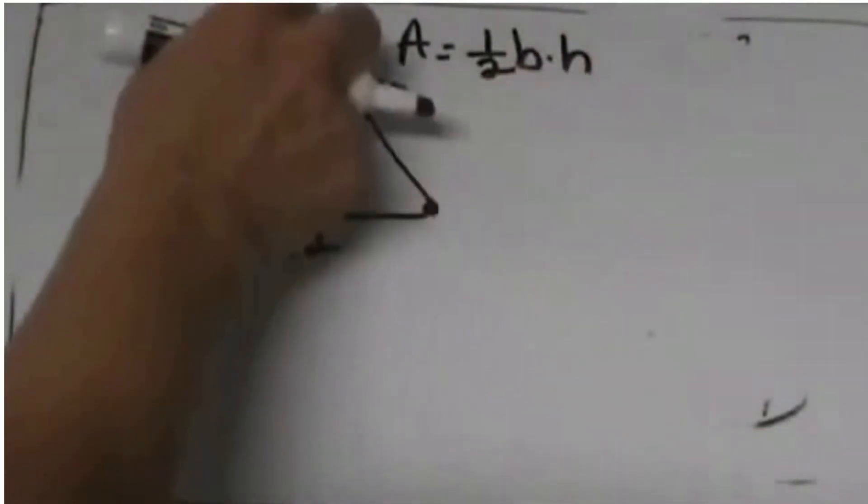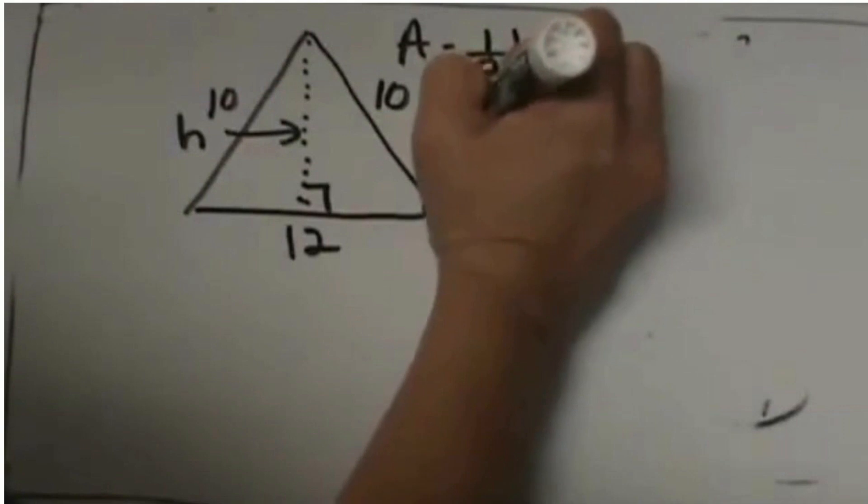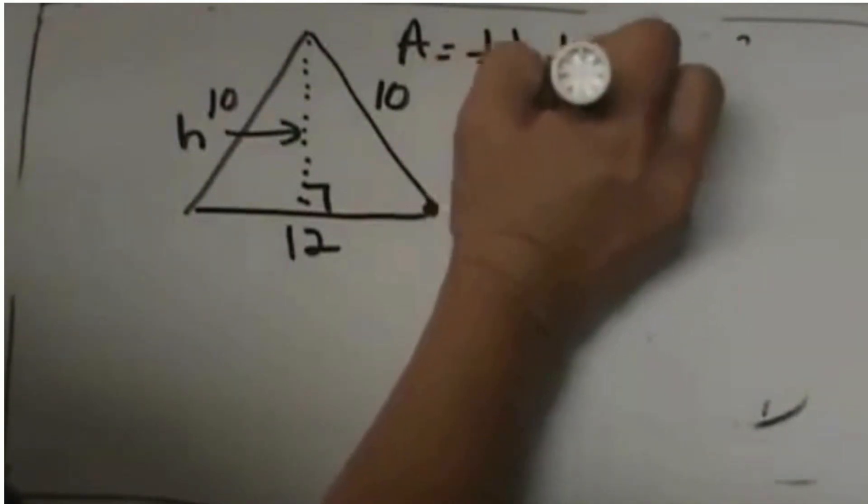Our base in this one, since we drew the height down this way, that means 12 is our base. So I am going to put a 12 in here.